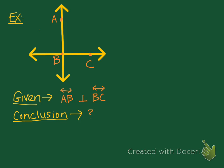The key words and key symbols here are that we have two lines and that they're perpendicular — that symbol means perpendicular. If we think of the theorems and definitions and postulates that we already know, perpendicular lines intersect at right angles. So based on that theorem, we can draw the conclusion that angle ABC is a right angle.